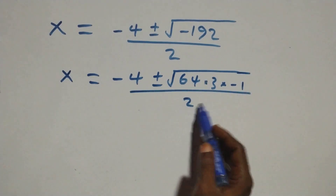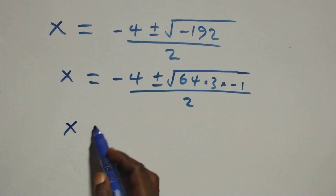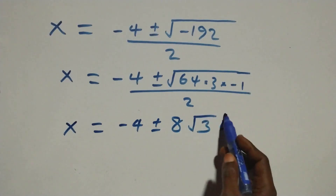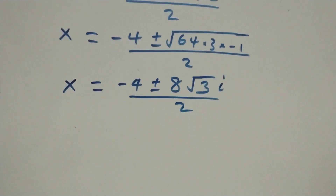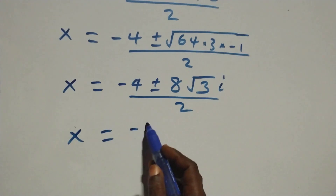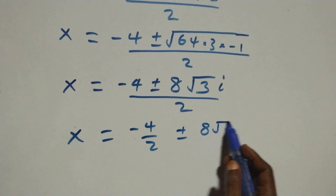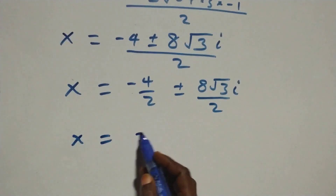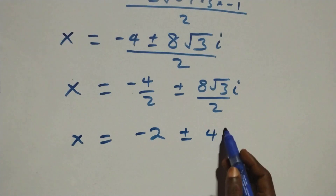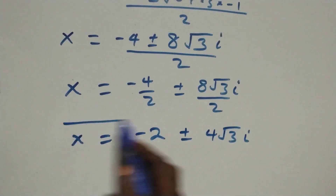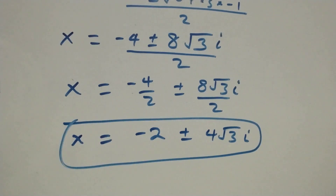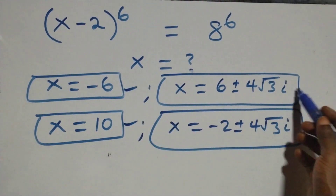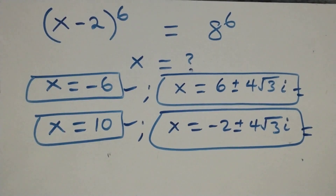This becomes x = (−4 ± √(64 × 3 × −1)) / 2, so x = (−4 ± 8√3·i) / 2 = −2 ± 4√3·i. These are also two complex solutions. Therefore, altogether we have 6 solutions: 2 real solutions (x = −6 and x = 10), and 4 complex solutions. Thank you for watching.